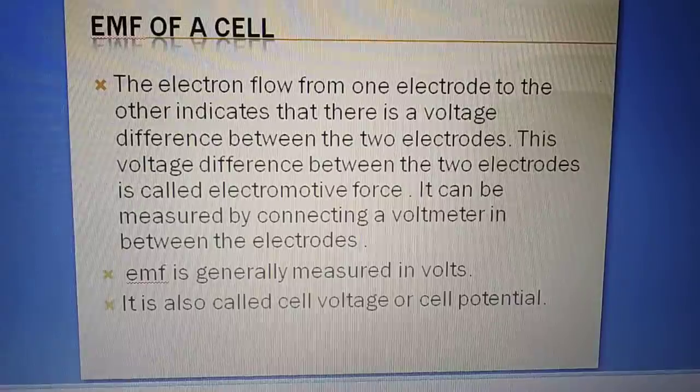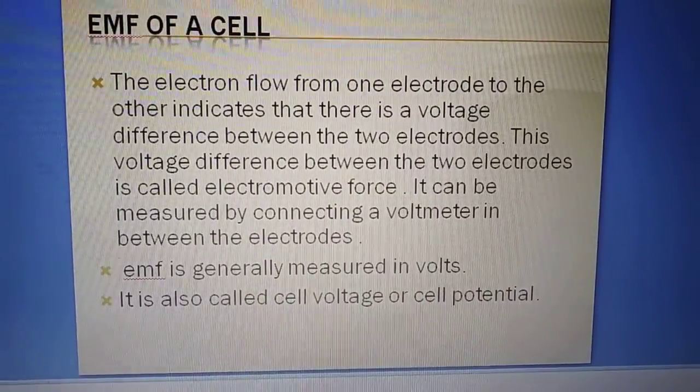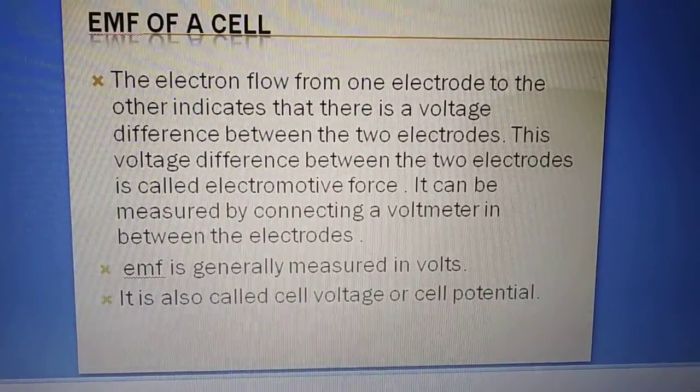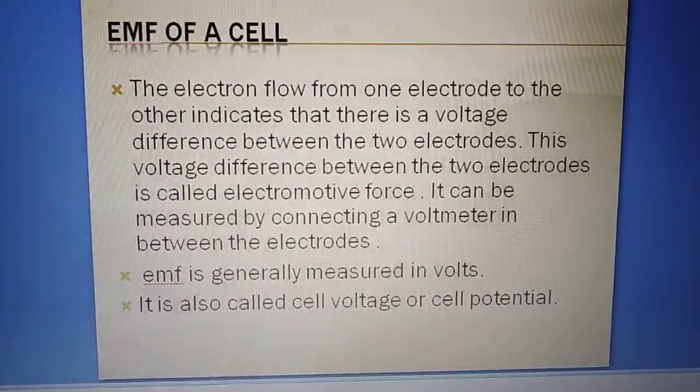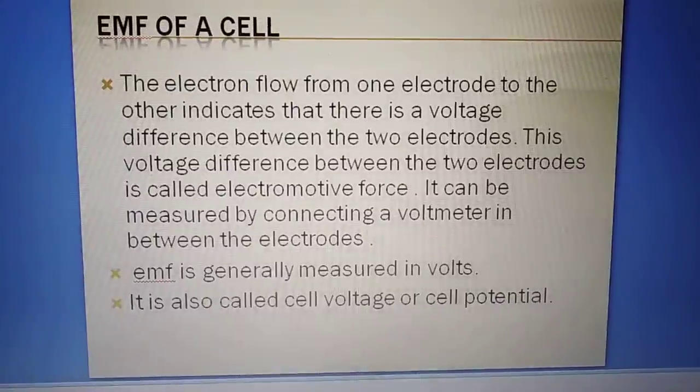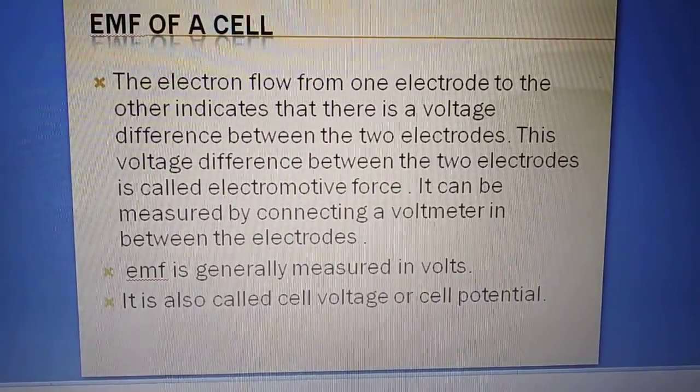We have seen in that video that electron flows from one electrode to another, and this flow of electron happens due to the difference in voltage.